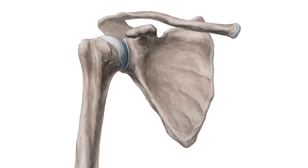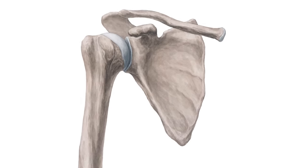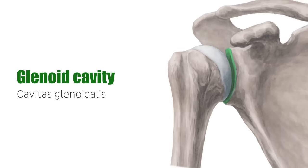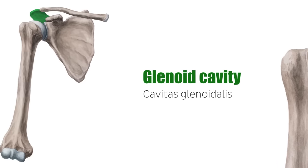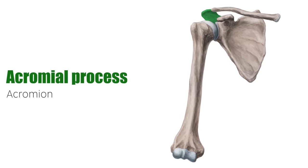The scapula articulates with two other bones: laterally with the humerus at the glenoid cavity, which is now seen here highlighted in green, and superiorly with the clavicle at the acromial process.